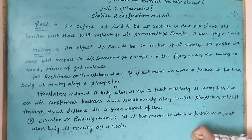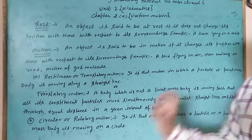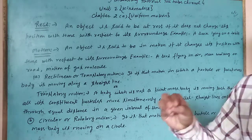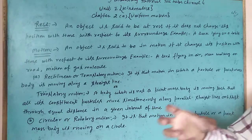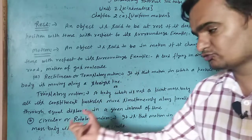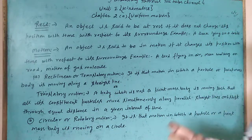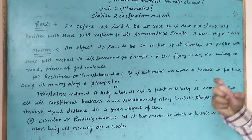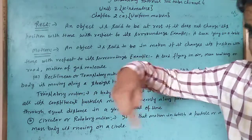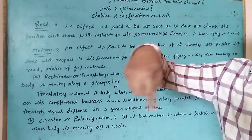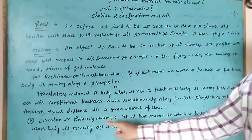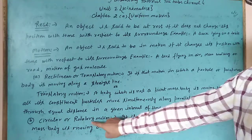Circular motion क्या होता है? That motion in which a particle or a point mass body moves on a circle is called circular motion. जहाँ पर कोई particle या point mass body एक circle में move करती है, उसे circular motion कहते हैं। Now let's discuss rotatory motion.